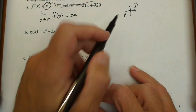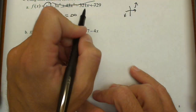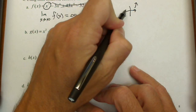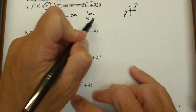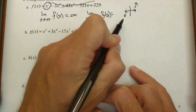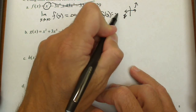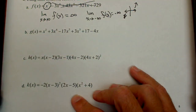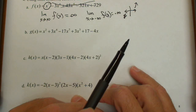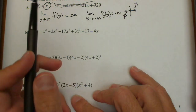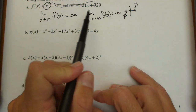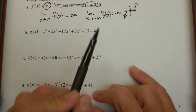For the other end, we write: the limit as x goes to negative infinity of f of x. As we go to negative infinity, our polynomial goes down, so it equals negative infinity. To summarize: when we have an odd degree, the ends go in opposite directions. Because the lead coefficient was positive, going to positive x gives positive y, and going to negative x gives negative y.